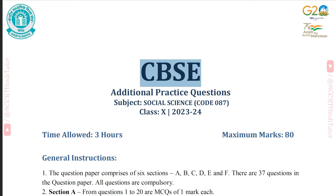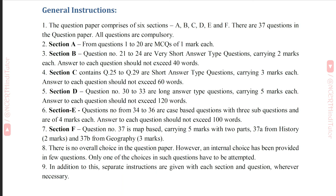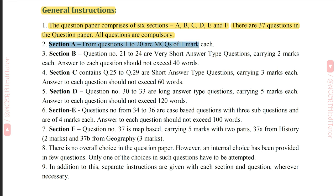CBSE additional practice questions, subject: social science, code 087, class 10, 2023-24. Time allowed: 3 hours, maximum marks: 80. General instructions: the question paper comprises six sections — A, B, C, D, E and F. There are 37 questions in total, all compulsory. Section A, questions 1 to 20, are MCQs of one mark each.